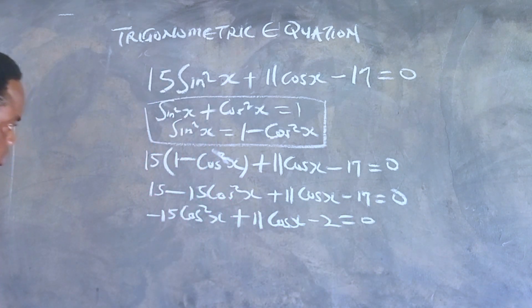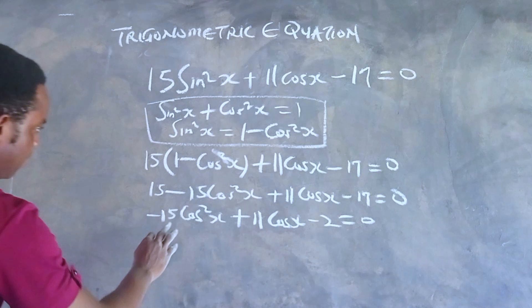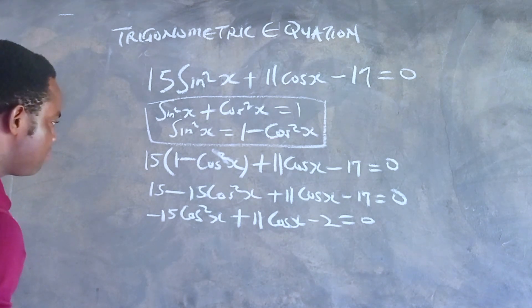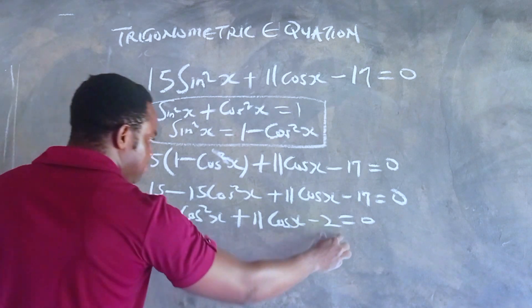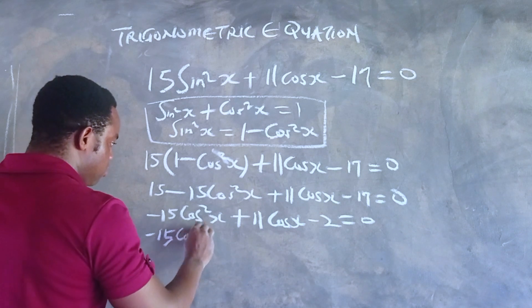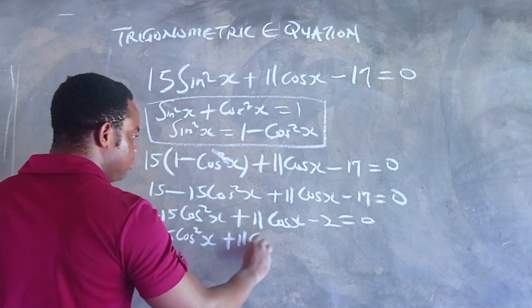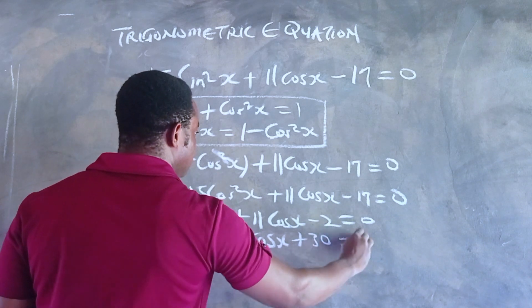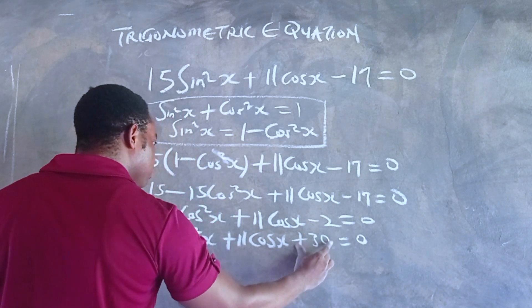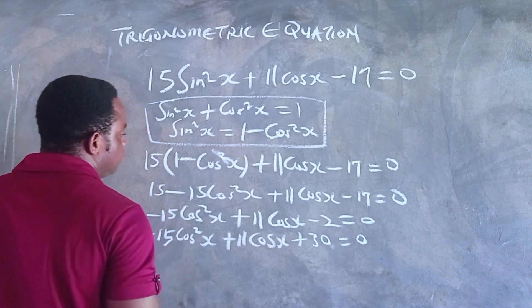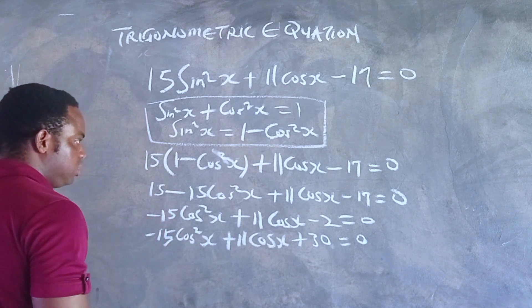At this point, you should treat this as a quadratic. You'll notice it's of the quadratic form. Let us multiply -15 by -2 to get 30. What two factors multiply to give 30 and add up to give 11? You'll notice 5 and 6 will do: 5 × 6 = 30 and 5 + 6 = 11.